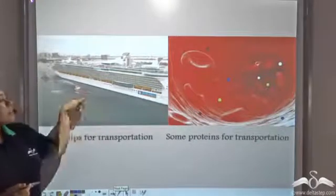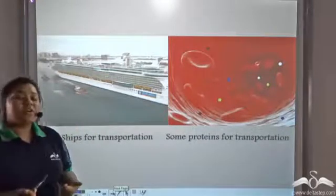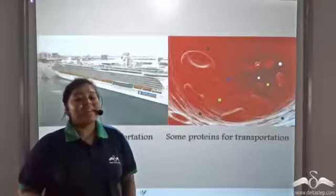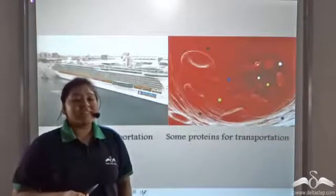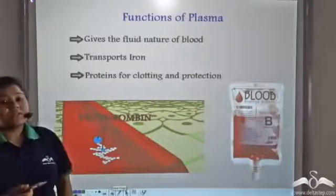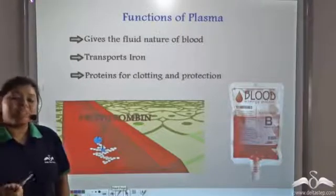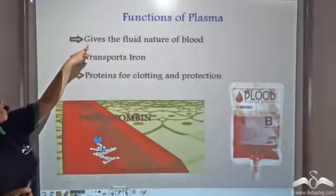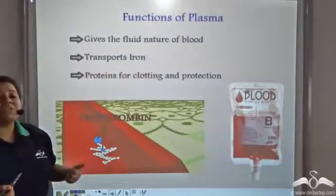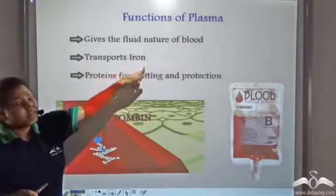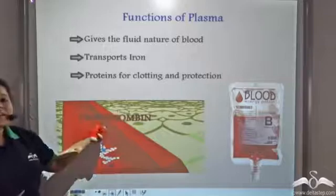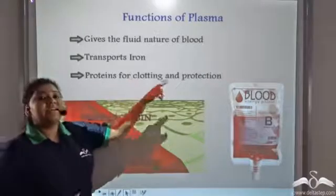Just like there are ships and boats for transportation on waterways, there are many proteins in the plasma that help in the transportation of nutrients such as iron. The different functions of plasma are that it gives the fluid nature of blood, it transports nutrients like iron, and it also contains proteins for clotting like prothrombin and fibrinogen.